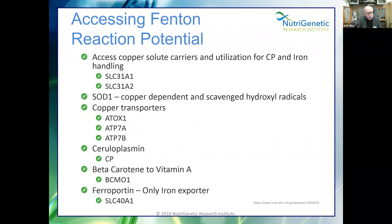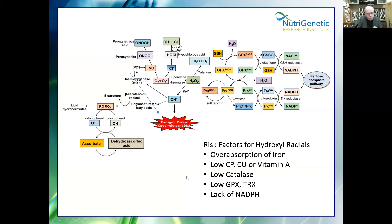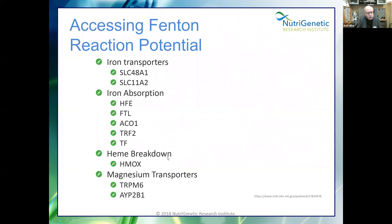When I tell people it looks like they over-absorb iron, they say 'that can't be true because I've been told I'm anemic my whole life.' But if excess iron is being consumed to make hydroxyl radicals, blood levels can be low. If someone has low hemoglobin or low iron and you give them iron and they feel worse — we've seen people with low iron where we support their catalase, glutathione, and NADPH without giving iron, and their iron levels rise because we've slowed down the Fenton reaction.